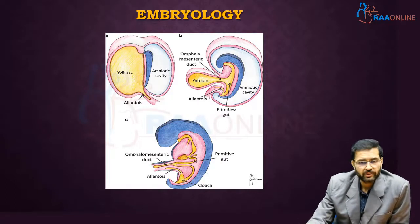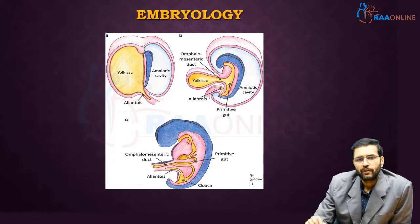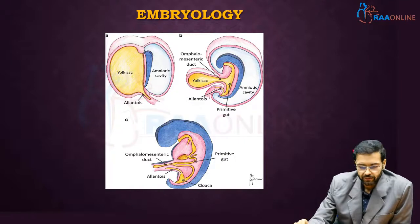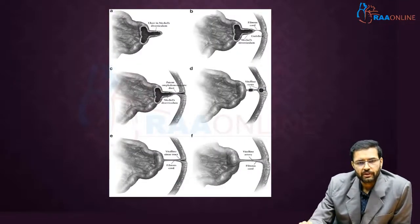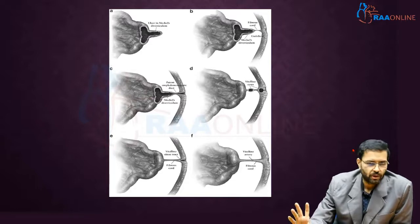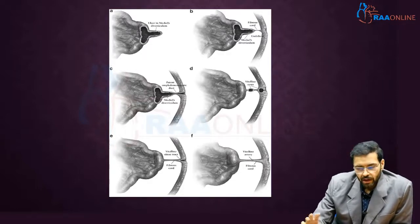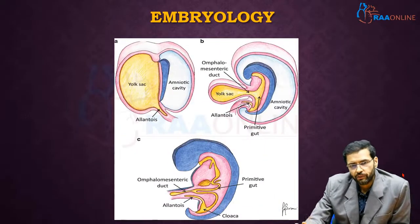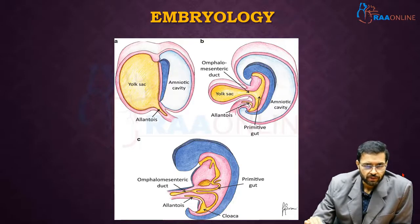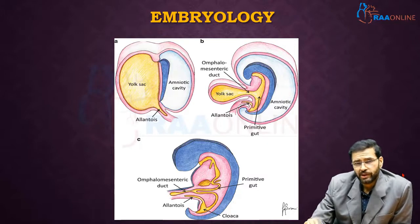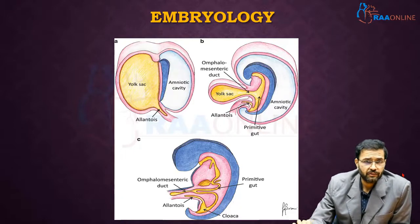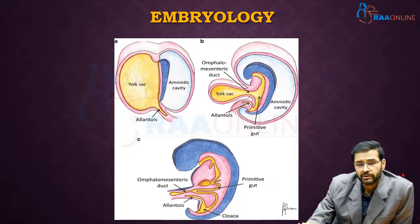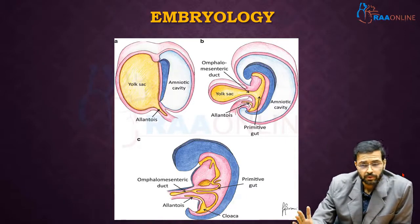When this omphalomesenteric duct persists, you have various vitelline duct anomalies — these are the various remnants of the vitellointestinal duct. It is important to note that the vitelline duct has two arteries: a right and a left vitelline artery. The left vitelline artery gets obliterated, whereas the enteric portion of the right vitelline artery is the one which forms the superior mesenteric artery. Hence, Meckel's diverticulum gets its blood supply from the mesentery of the midgut — an important point to note.